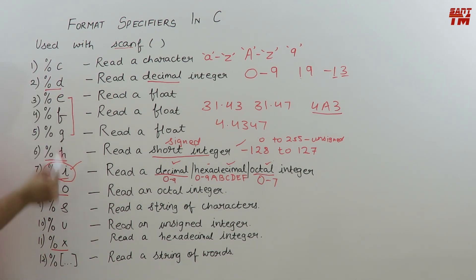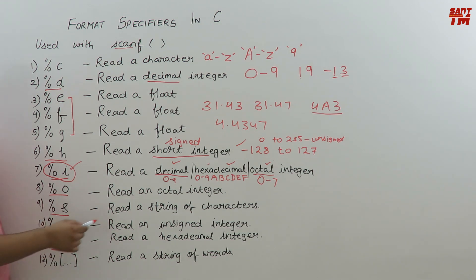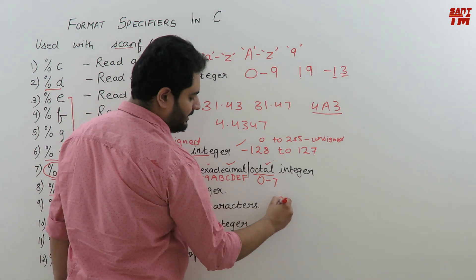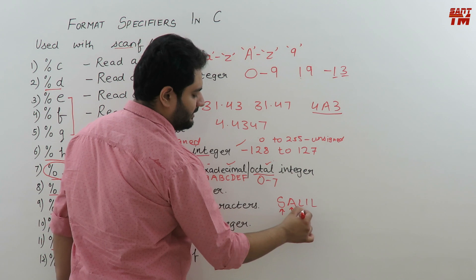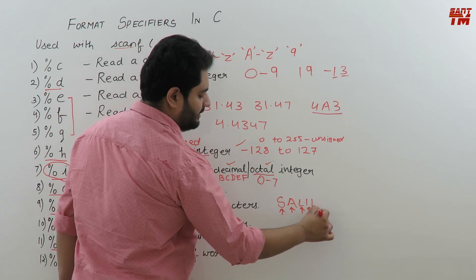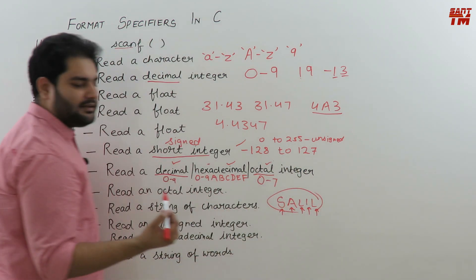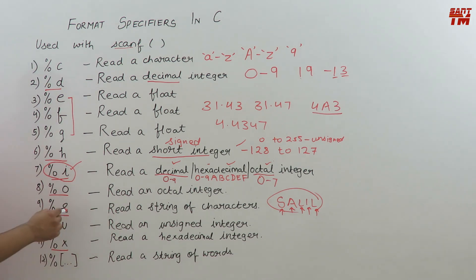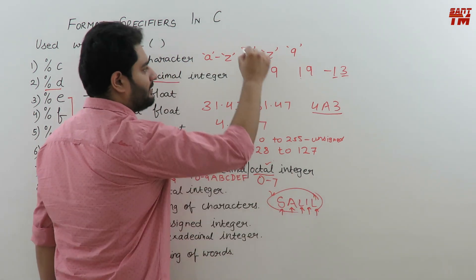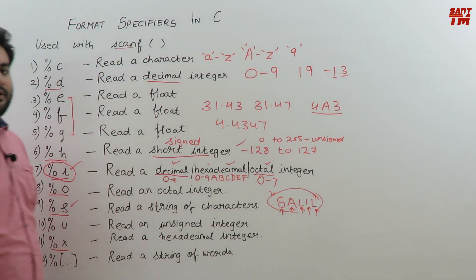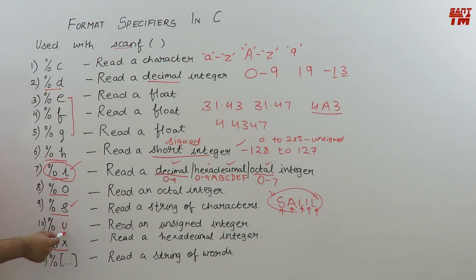%s is used to read a string of characters. For example, the name Salil — S, A, L, I, L — each is a character, and together they form a string, which is a collection of characters. Strings always come in double quotes, while a single character always comes in single quotes.